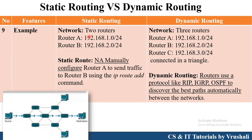For another example: in static routing with two routers, router A wants to send information to router B. The network administrator manually checks the path between them using the command 'IP route address', which is used to find a particular path and check the traffic. On the other side, in dynamic routing, routers send information to each other using routing protocols such as RIP, IGRP, and OSPF. These routing protocols automatically discover the best path in the network. This is the basic difference between static and dynamic routing.